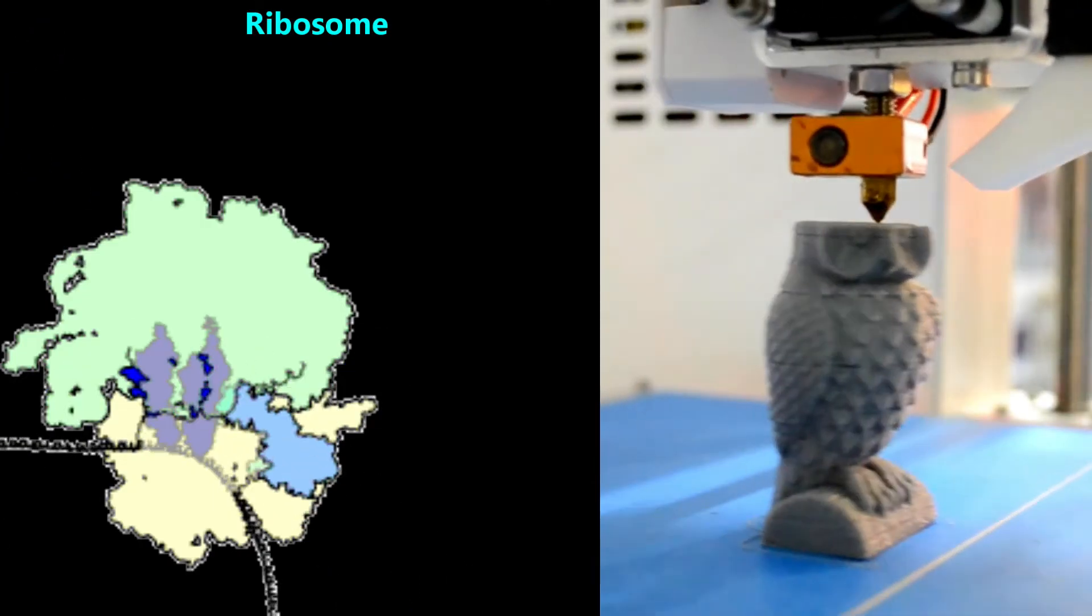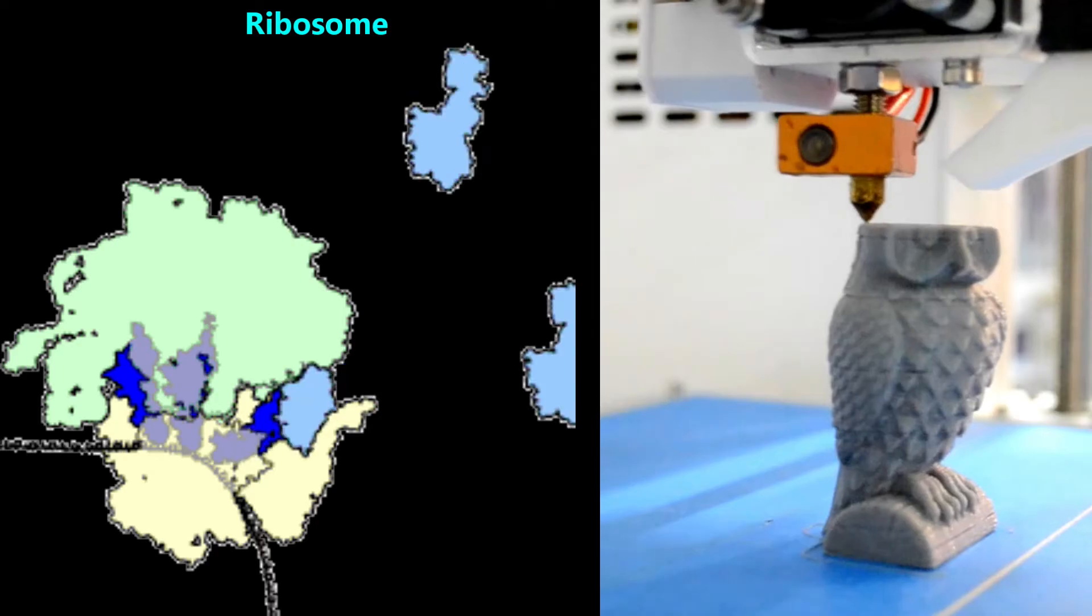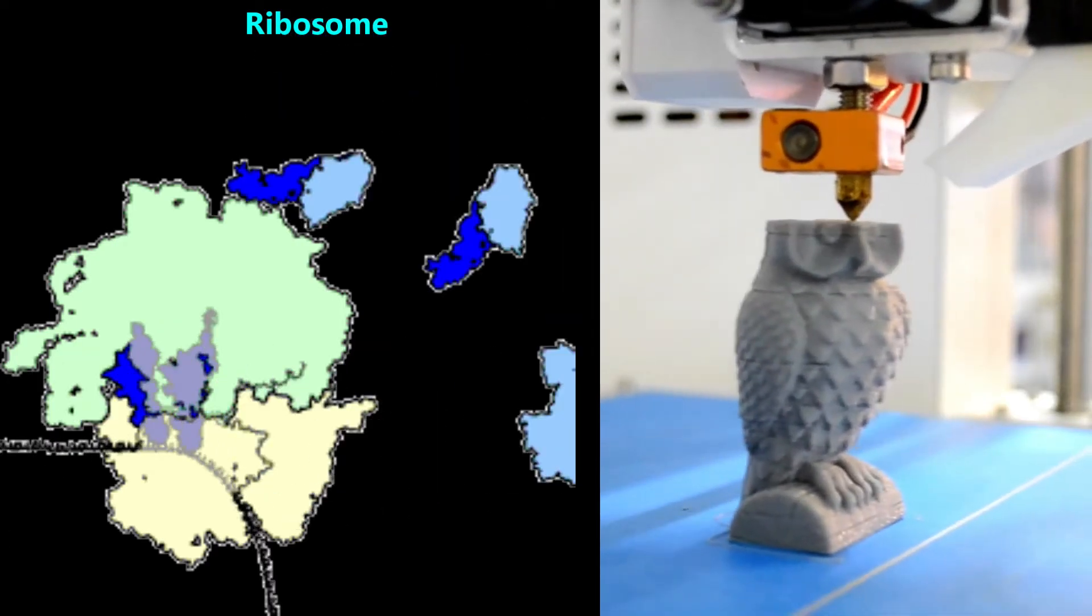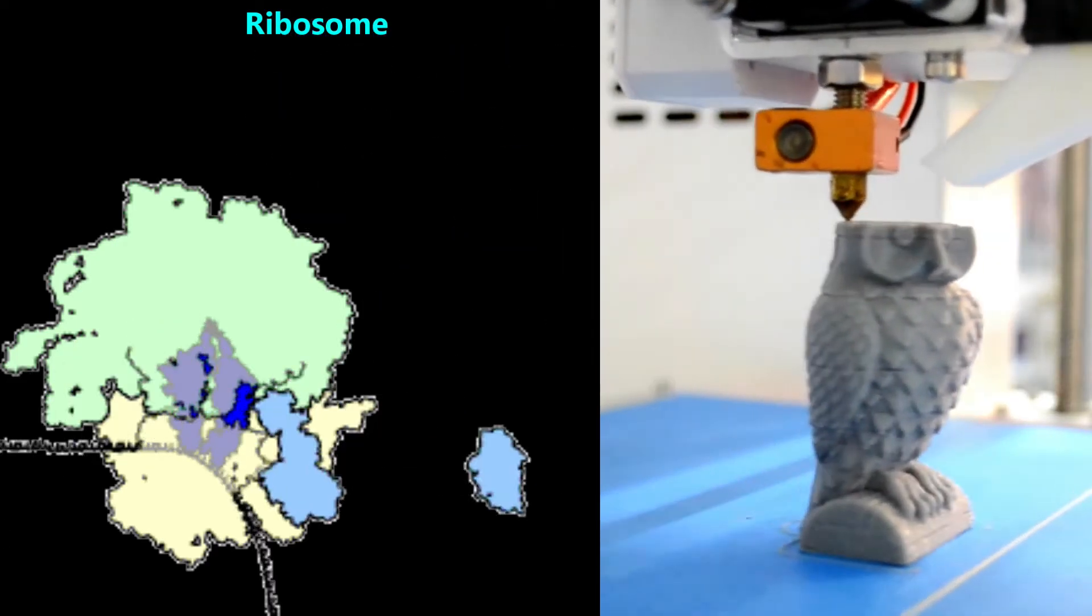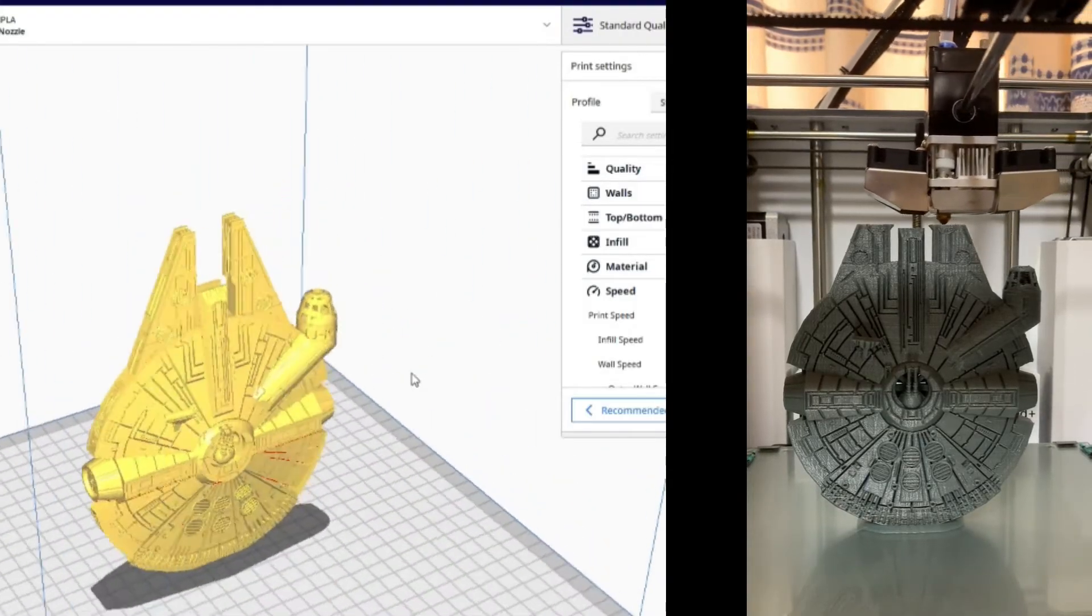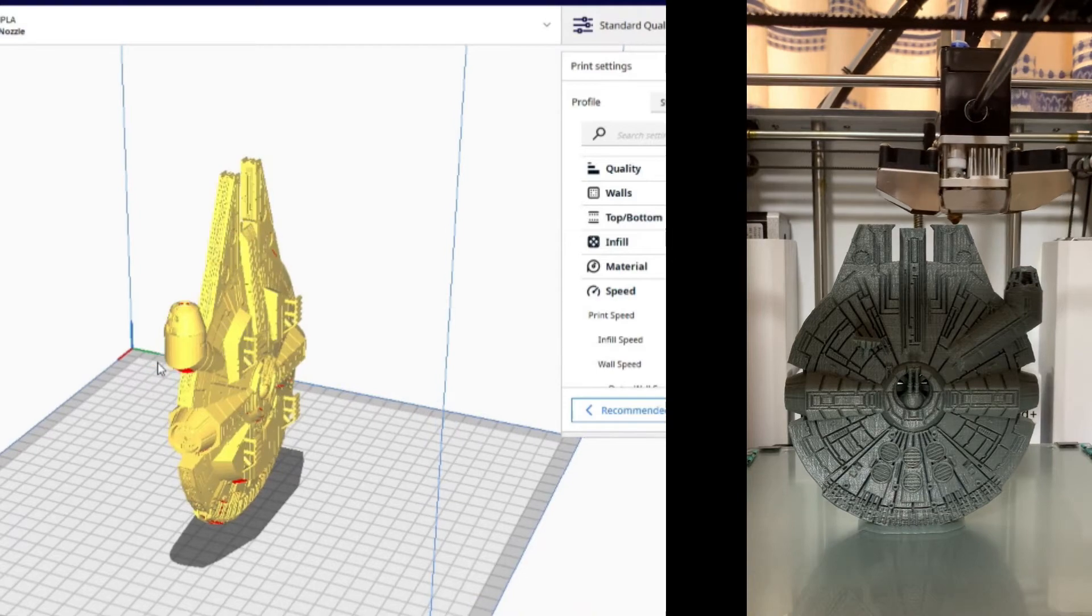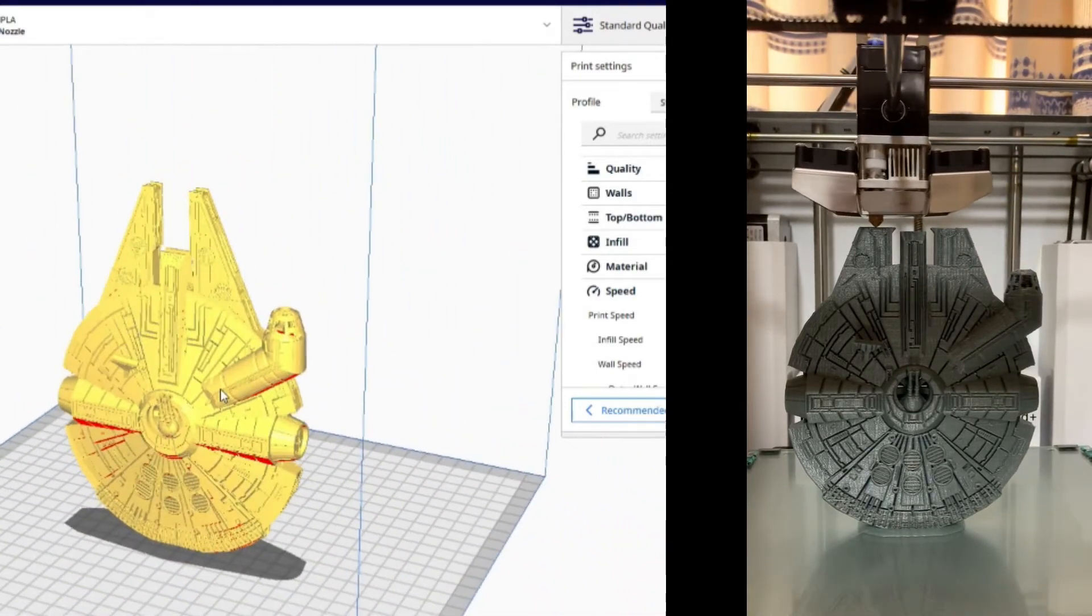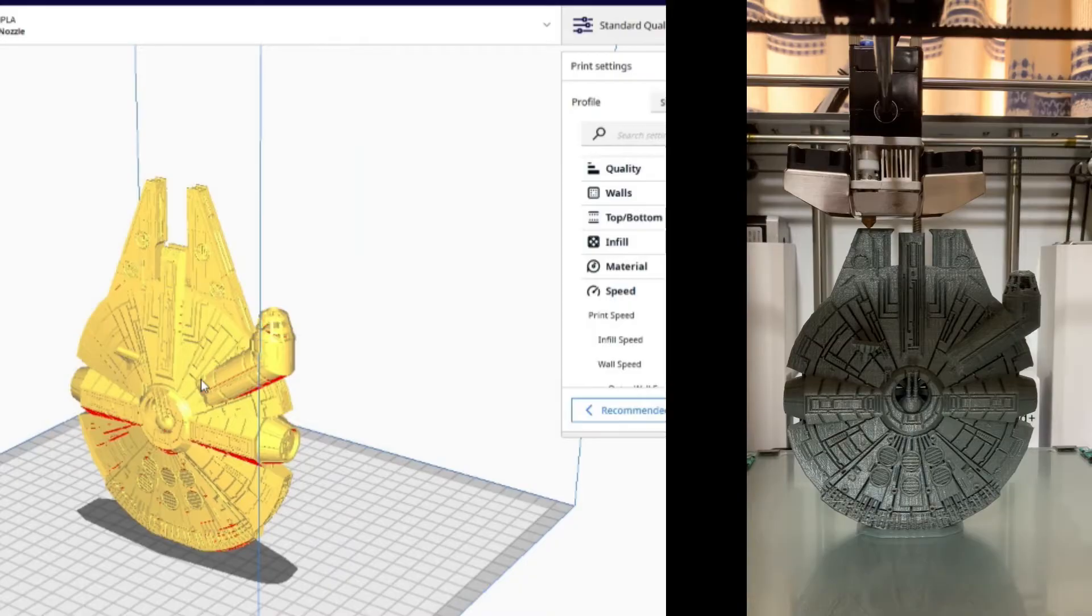A ribosome is similar to a 3D printer, because both ribosomes and 3D printers can make objects that are any shape based on any design they are given. For example, let's say we made this design on our computer. Now, we can send a copy of this design to a 3D printer, and in a little while we'll be able to hold this object.